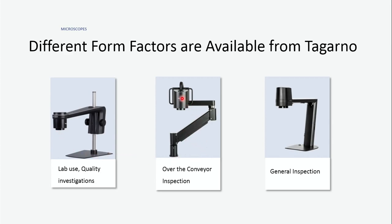We have another microscope here — there's the camera, and this is on an adjustable arm. You can mount it on a bench and use it that way, but oftentimes we see this on the production floor mounted over the top of a conveyor. The operator can stop the board right on the SMT line, use the microscope, move it around, look at various different sections, and then either pass or fail as you go.